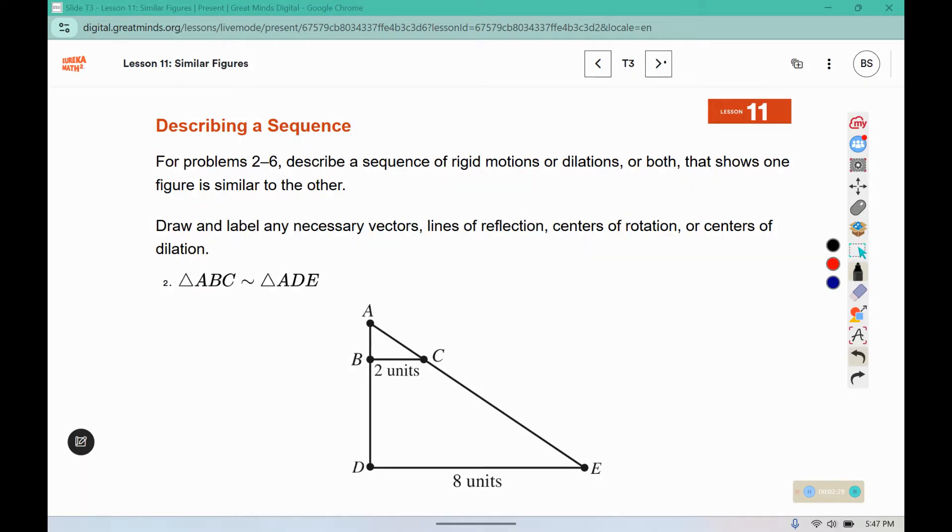So we said that they dilated from center A because they extend along those lines. And we looked at these two distances. Eight divided by two gave us four. So dilate from center A using a scale factor of four.